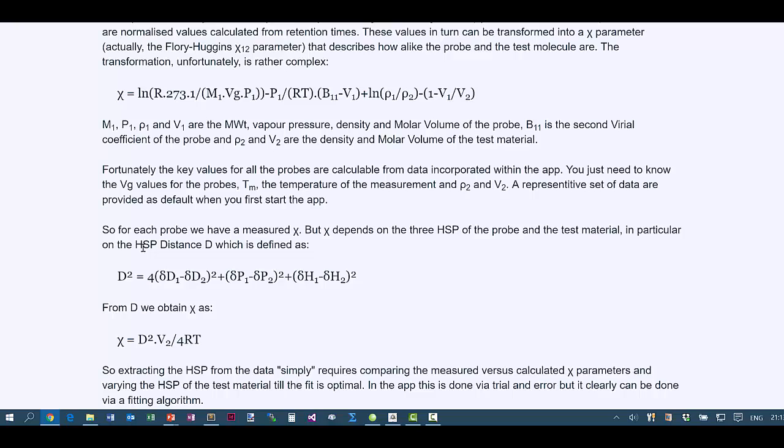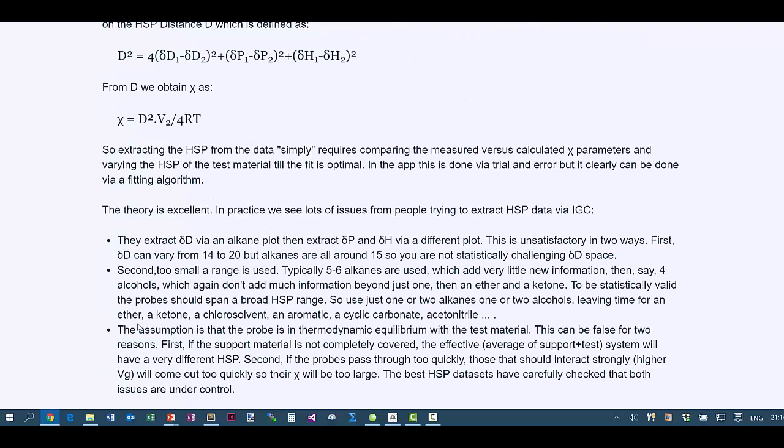Well, the classic equation for HSP is that the distance in HSP terms is the sum of the squares of the differences between the DD, DP, and DH values. And it happens that D squared is related to the chi value via this formula. So, we know the chis. We know the D, P, and H values of each of our probes. So, what we do is find values of D1, P1, and H1 for the polymer so that the D squared values fit the chi values. In other words, we do a least square fitting between calculated chi values from the estimated HSP values and the experimental values. This will make more sense when I show the app.